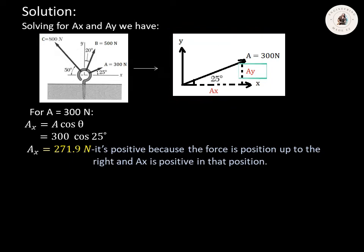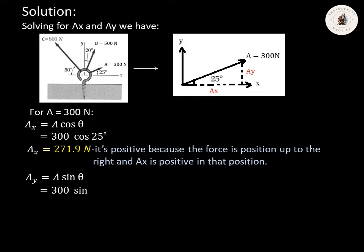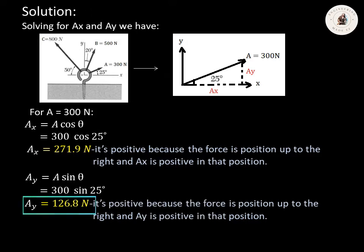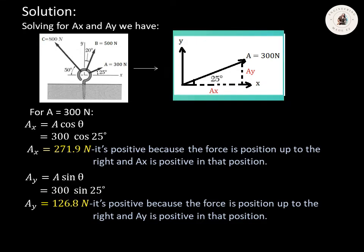Solving for AY: as you can see in the figure, AY is the opposite side. So AY equals A sine theta. Theta is 25 degrees and A is 300. Therefore AY equals 300 multiplied by sine 25 degrees. Using your calculator, AY equals 126.8 Newton. The sign convention is positive because the force is positioned up to the right, and AY is positive in that position.